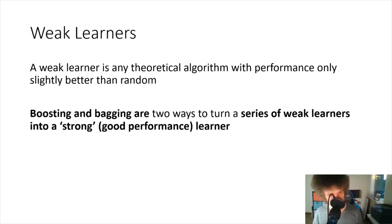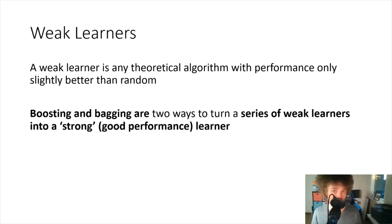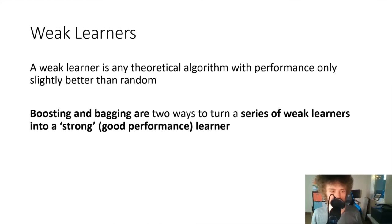The really interesting thing is that if you have even just 51% accuracy, with an infinite number of models you could have a very strong model. If you have a series of models trained on different features and trained differently, there is a way to combine those to get a very strong model. Two different approaches for combining them are called boosting and bagging.